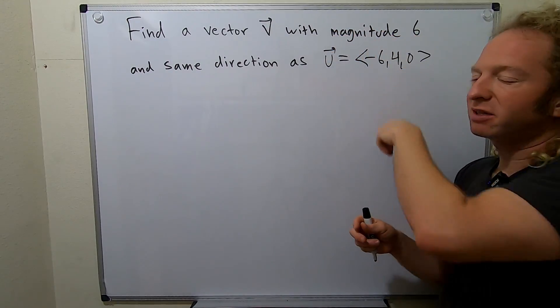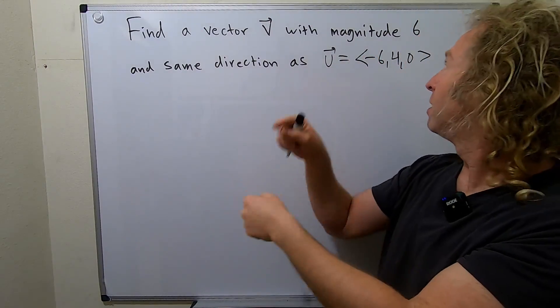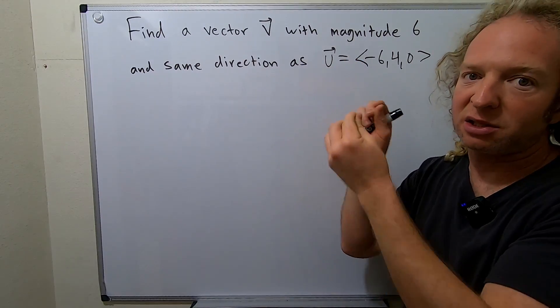So if we take this one, shrink it to a tiny little vector that has length 1, multiply it by 6, we're done. We have a vector pointing in the same direction as this that has length 6.